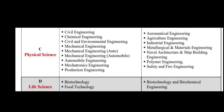Group C is called Physical Science. Physical Science is called the King of Engineering — Royal Mechanical. The oldest engineering branch is Civil Engineering. Group C includes Civil, Mechanical, Production, Mechatronics, Aeronautical, Agriculture, Industrial, Metallurgical and Materials Engineering, Naval Architecture, Polymer Engineering, and Safety and Fire Engineering.